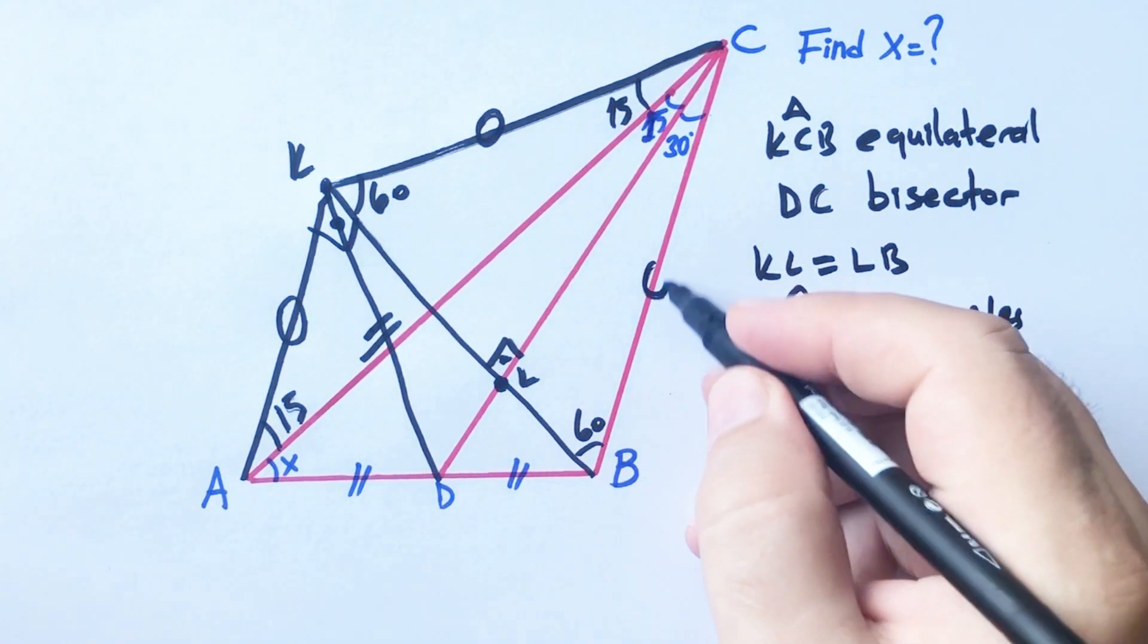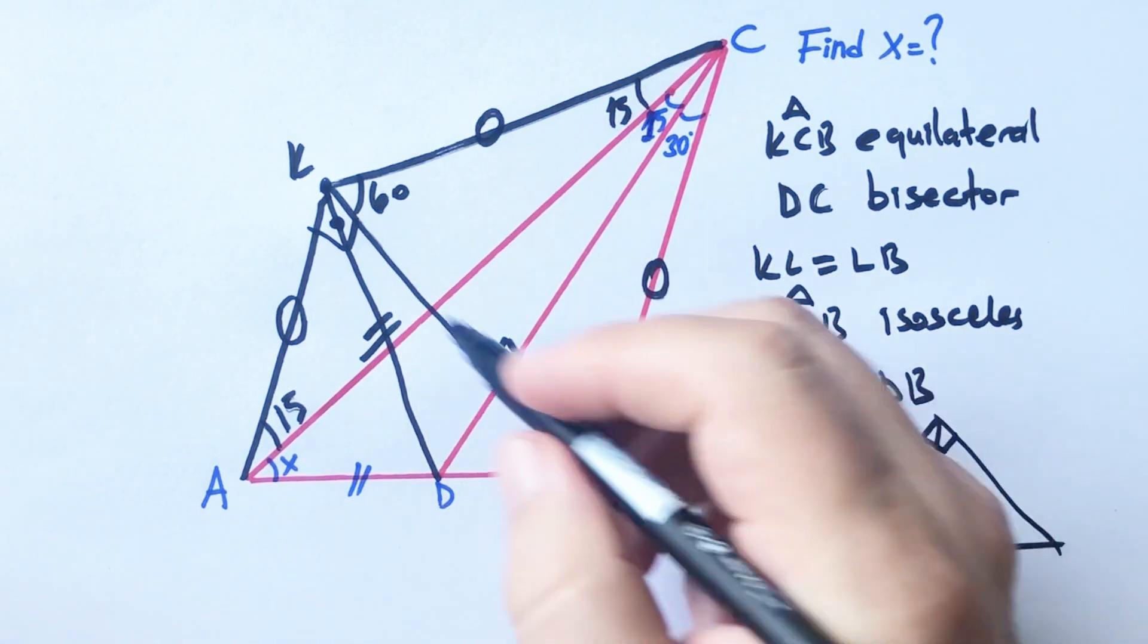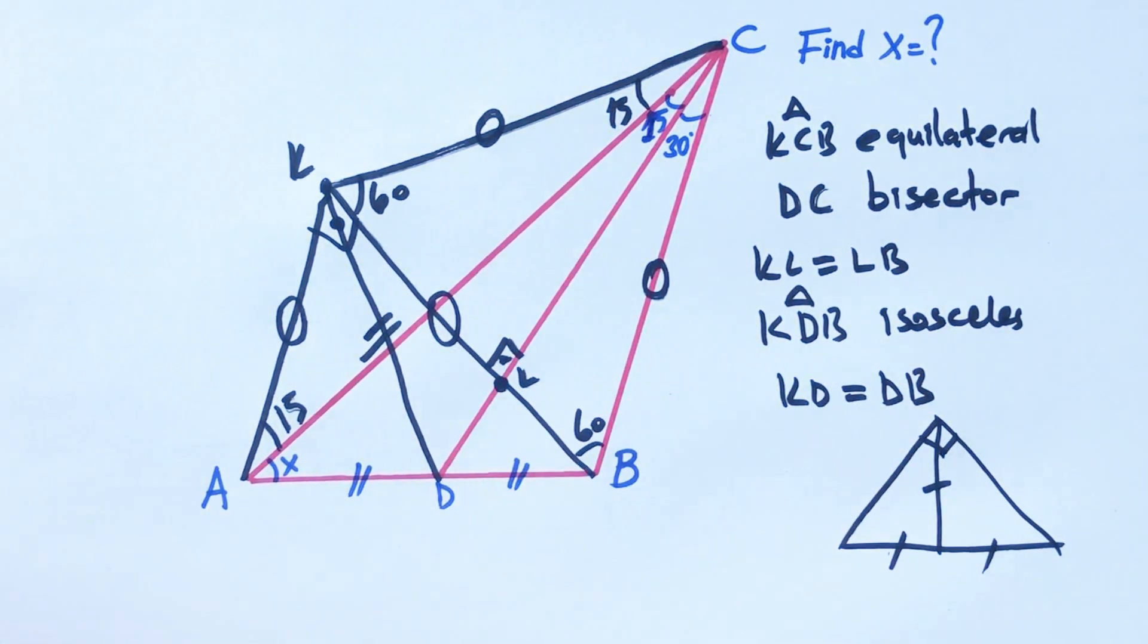We know that triangle KCB is an equilateral triangle. Finally, triangle AKB is also an isosceles triangle.